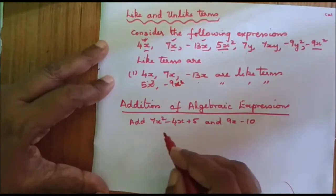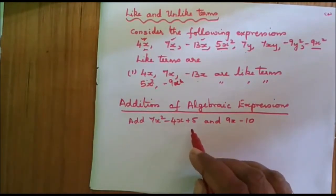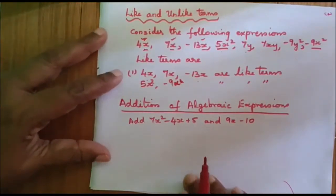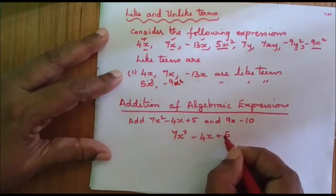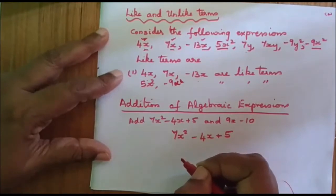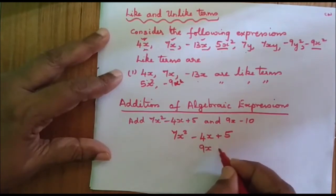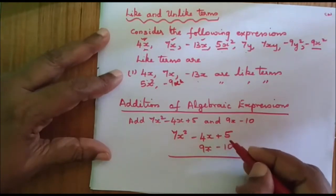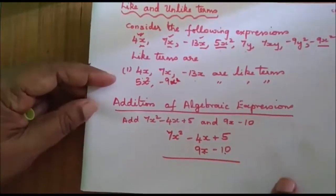Now let us look at addition of algebraic expressions. We are given two algebraic expressions: 7x squared minus 4x plus 5, and 9x minus 10. We arrange them so that like terms are one below the other. We write the first expression: 7x squared minus 4x plus 5. Then we write 9x underneath the x term, and minus 10 underneath the constant term.